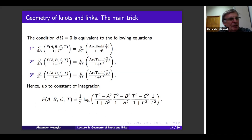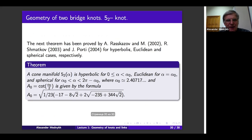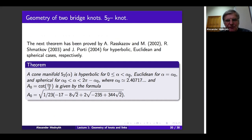The next link or knot is the knot 5₂. As in the case of the figure-eight knot, we are able to find the condition when the cone manifold based on this knot is hyperbolic: this happens if the angle is between 0 and α₀, where α₀ is a very explicit value whose cotangent of half the angle is given by a specific formula. For the particular value α = α₀ we have a Euclidean structure, and for large α we have a spherical structure. This is existing theory done by different people at different times.